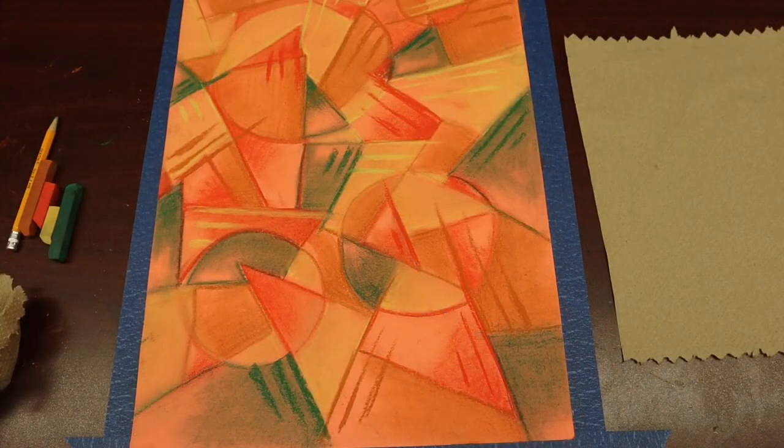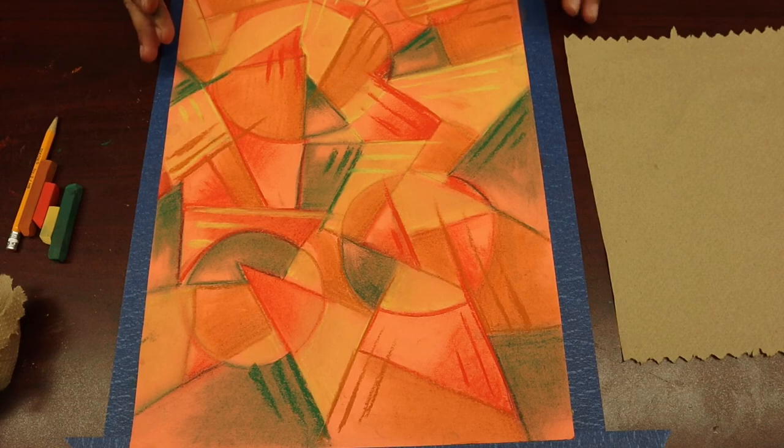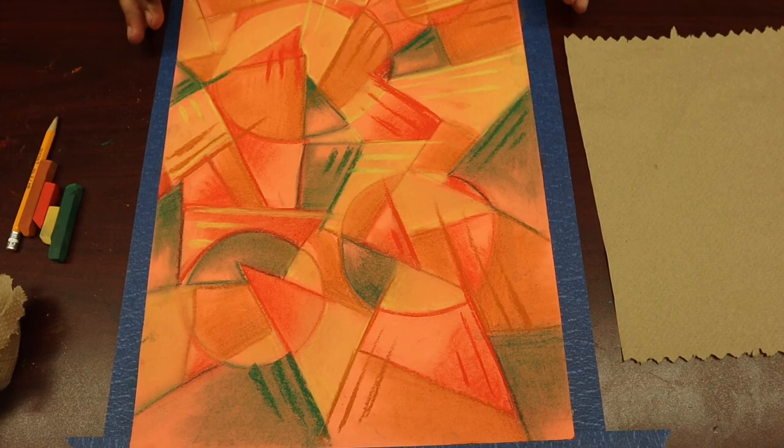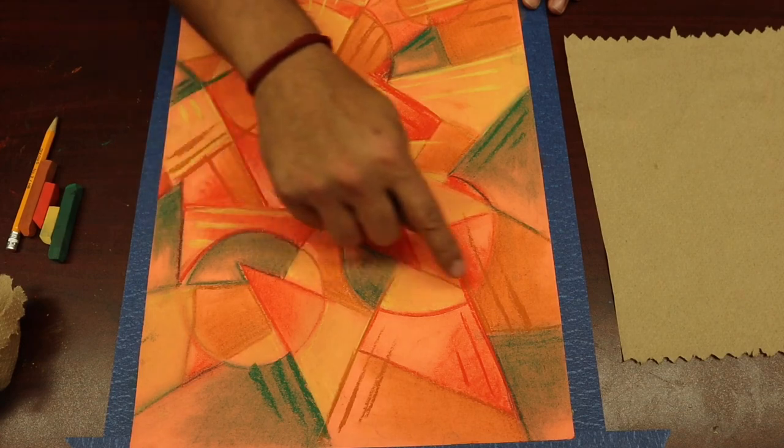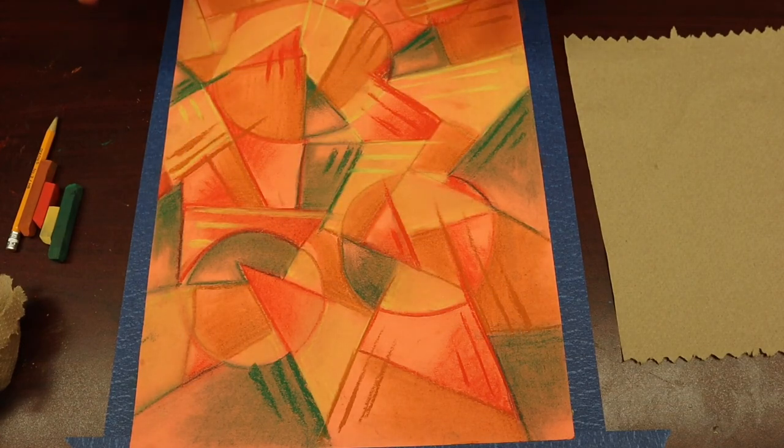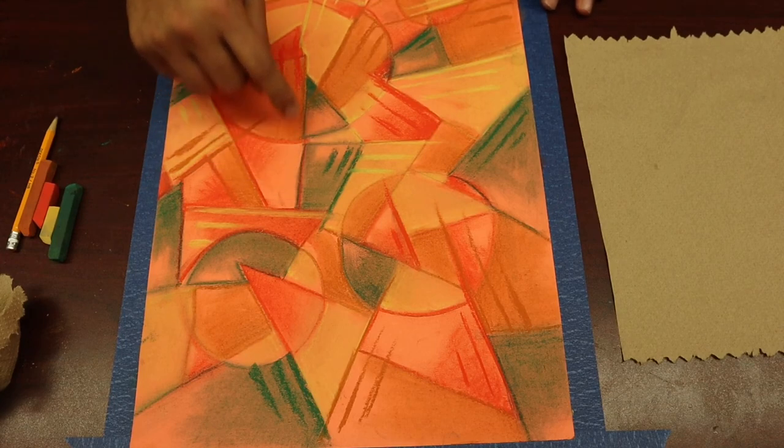Once you're completed with your chalk pastel project, this is what it should look like. It should look similar to this. Of course, you had a random piece of construction paper, random color. You had random chalk pastel colors and you made it happen. The last thing that I want you to do before you complete your project is I want you to take all of those colors that you used. I want you to randomly trace the shapes that you created with those colors. You see how I traced over everything? What happened there is I made everything pop out. All the colors popped out even more just by tracing around those random shapes.